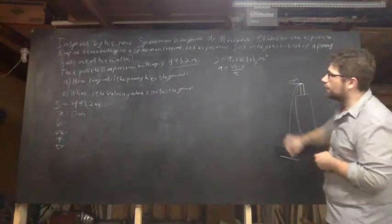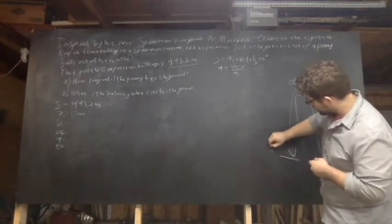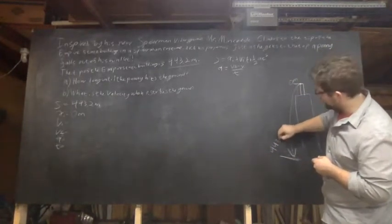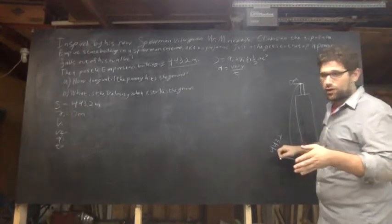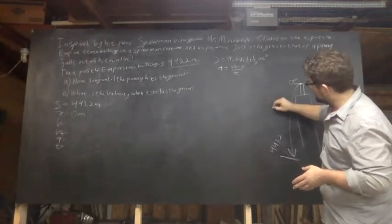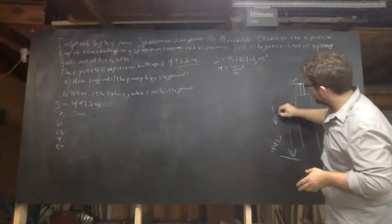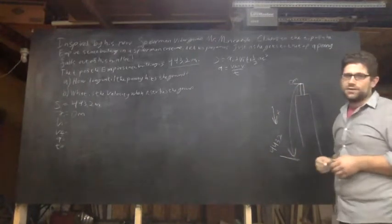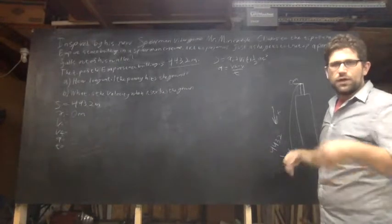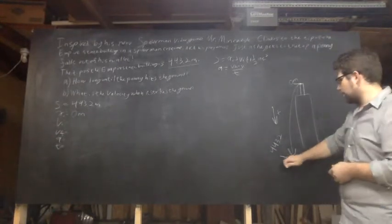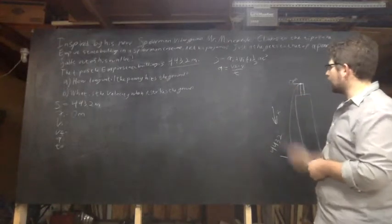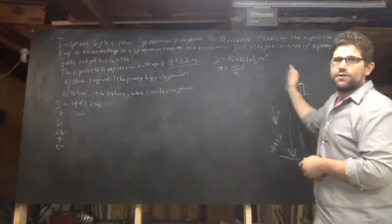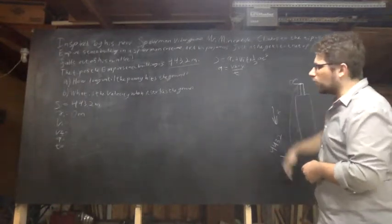And in order to make this easier on myself, I'm going to make everything going down positive, so then I don't have to deal with any negative numbers. The other way to do this would be to set the ground as zero, the top is 443.2, you can set your reference being upwards, and then everything's going to be negative going towards zero.